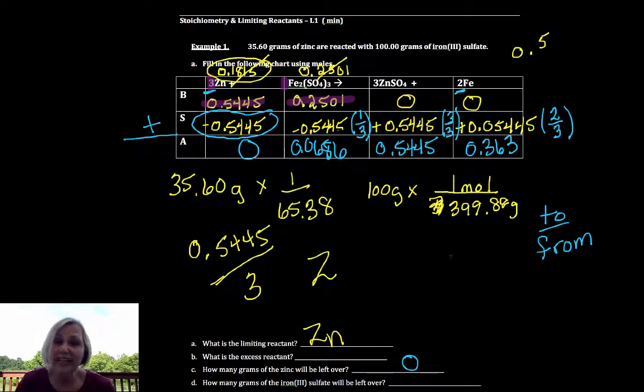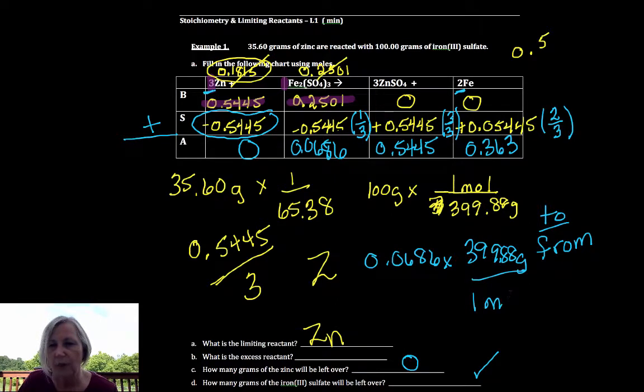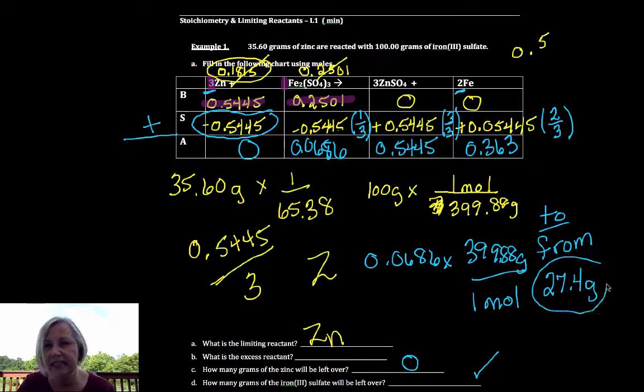Now, once I have moles, like I'd said, almost everything is pretty straightforward. Down at the bottom, one of the other questions is, is how many grams of our excess remaining? You see it clearly in the table. There's no memorizing an algorithm like is often taught, like I taught for years, in fact. So 0.0686 moles times 399.88 grams for every one mole. And I get 20.2 or 27.4 grams of my excess remaining.